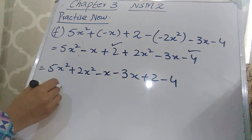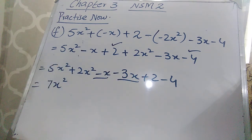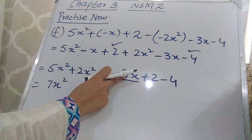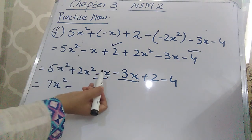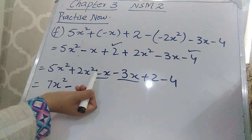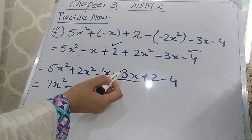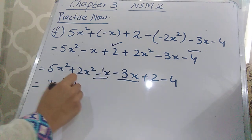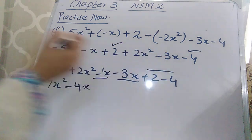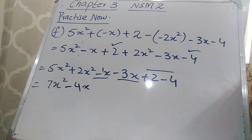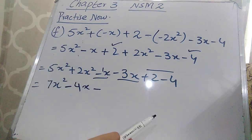Solving each group: plus + plus = plus, so 5 + 2 = 7x². For −x − 3x: minus × minus = plus so it's addition, 3 + 1 = 4, and the bigger number 3 carries a minus sign, giving −4x. For the constants +2 − 4: plus × minus = minus so subtract, bigger number is 4 with a minus sign, 4 − 2 = 2, giving −2. The final answer is 7x² − 4x − 2.